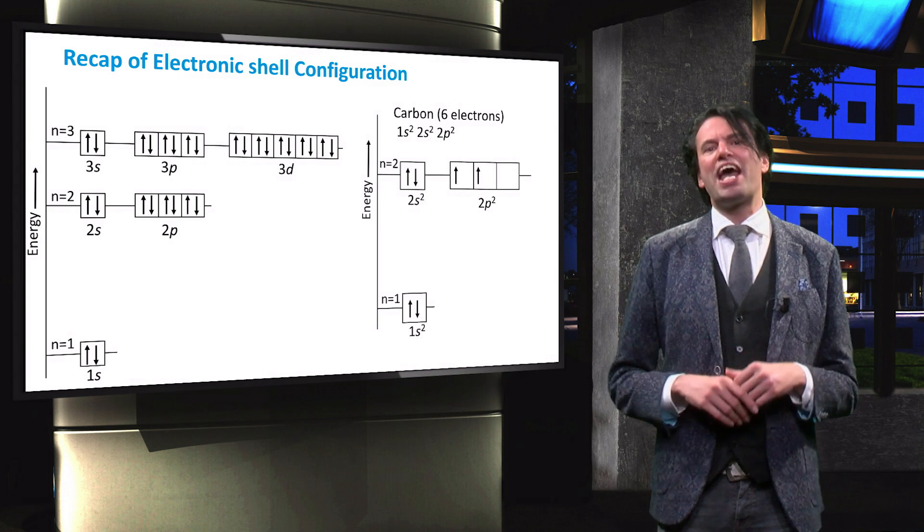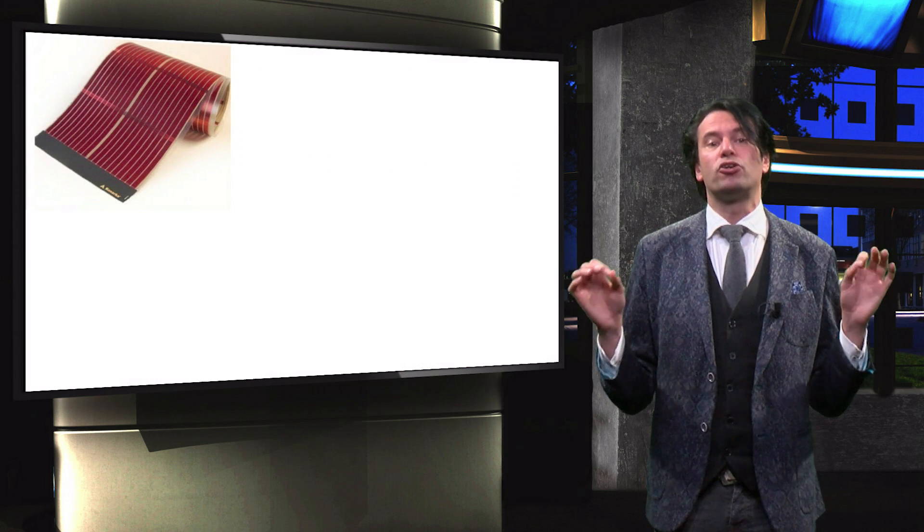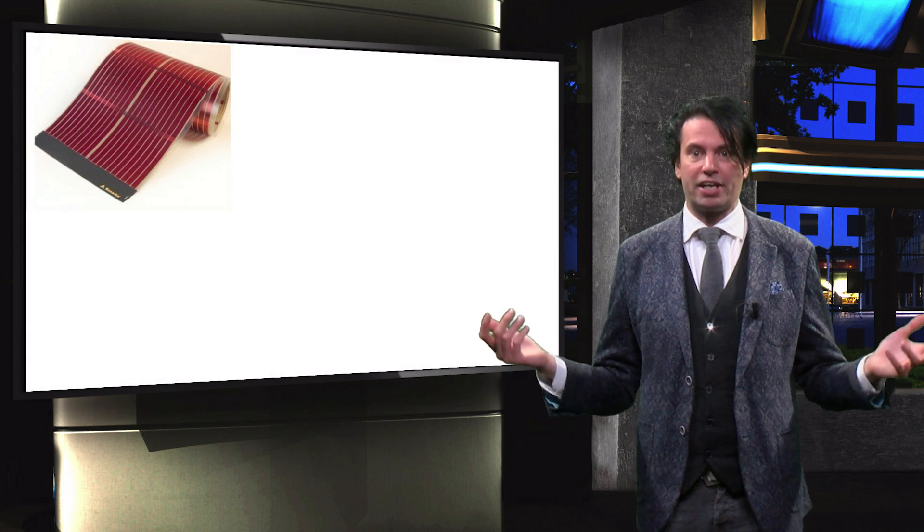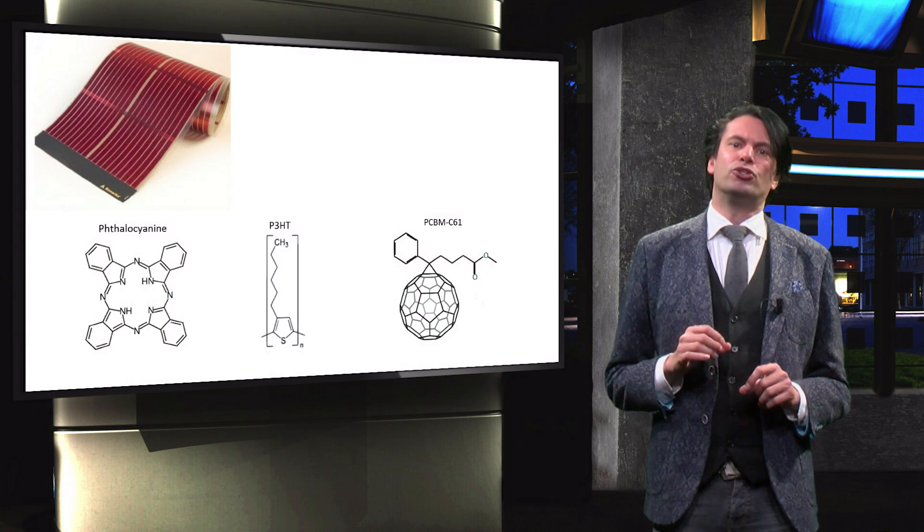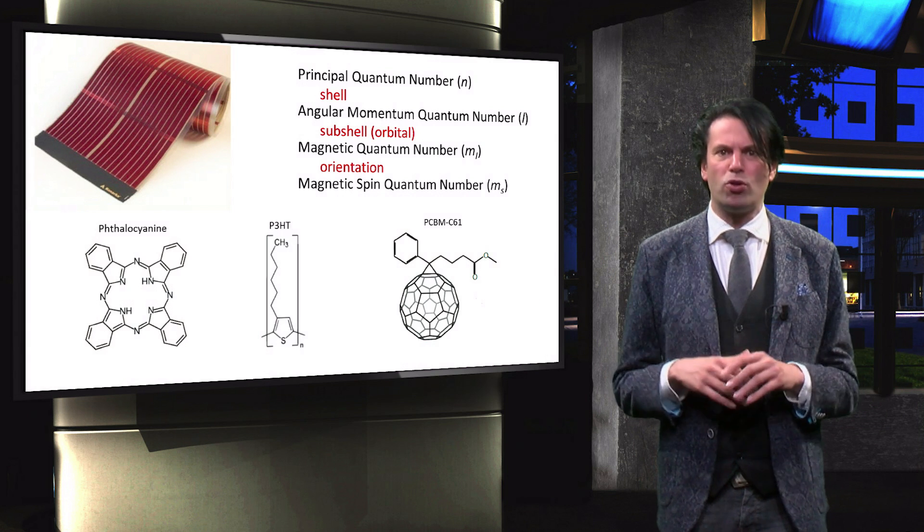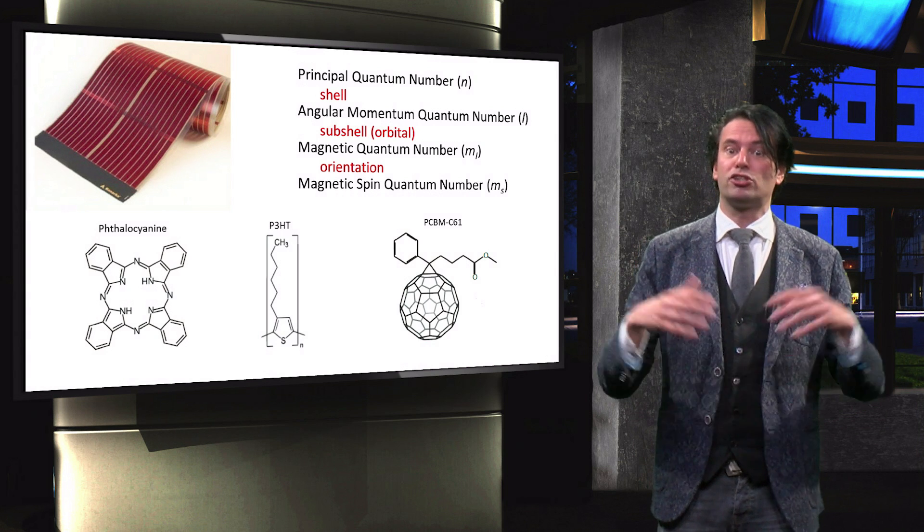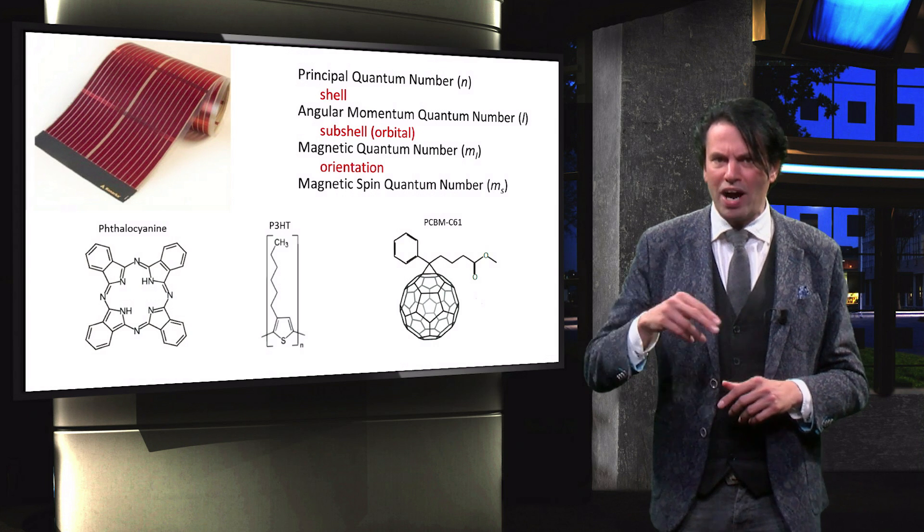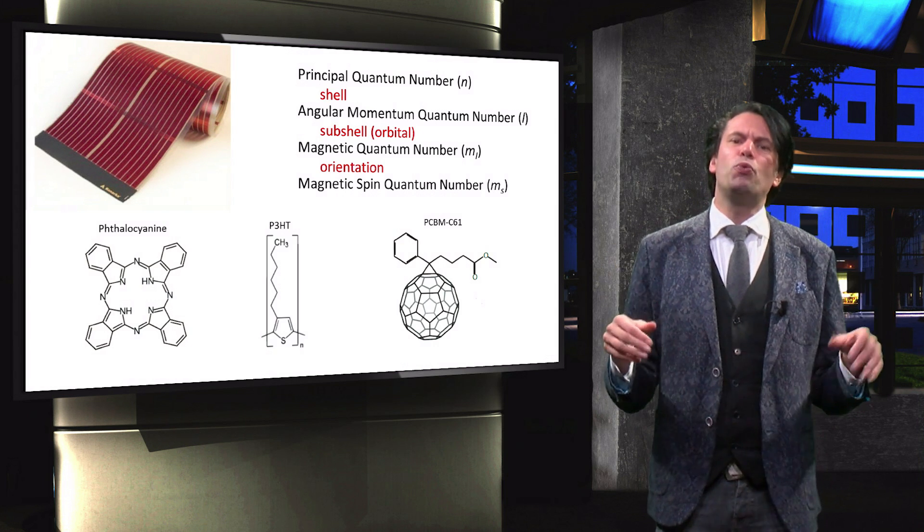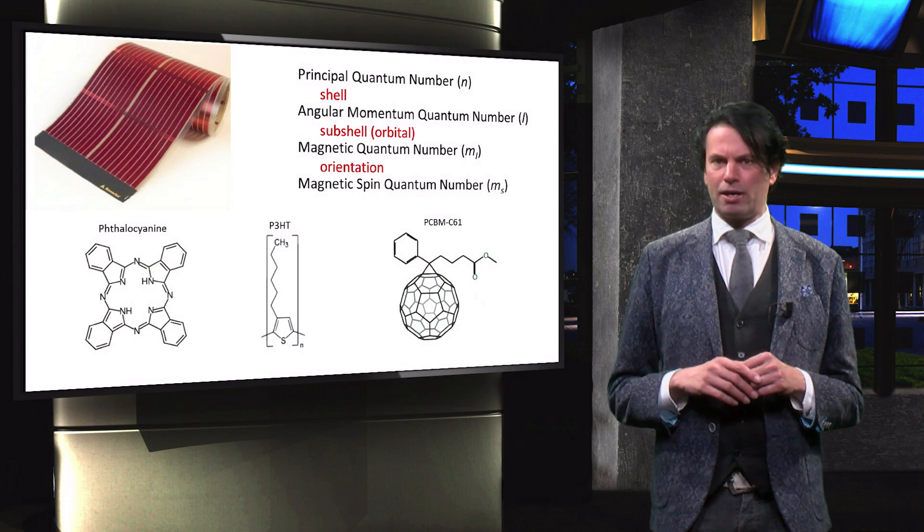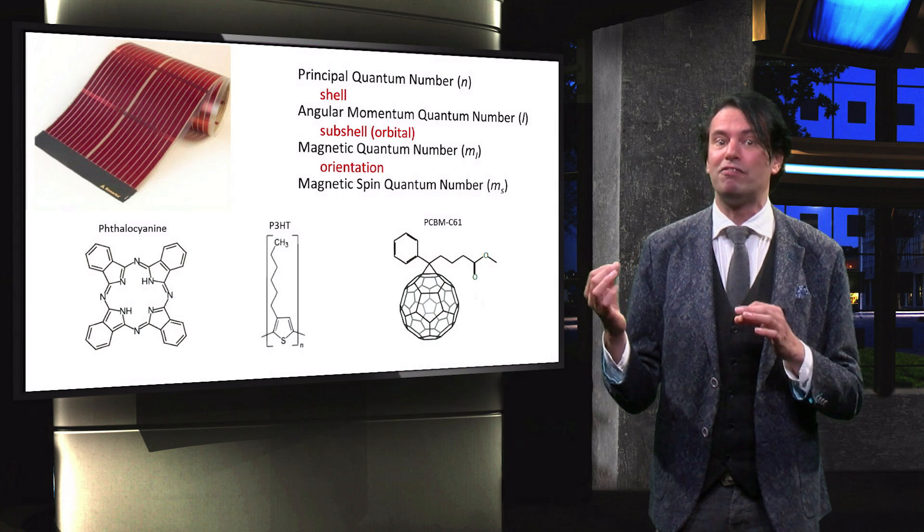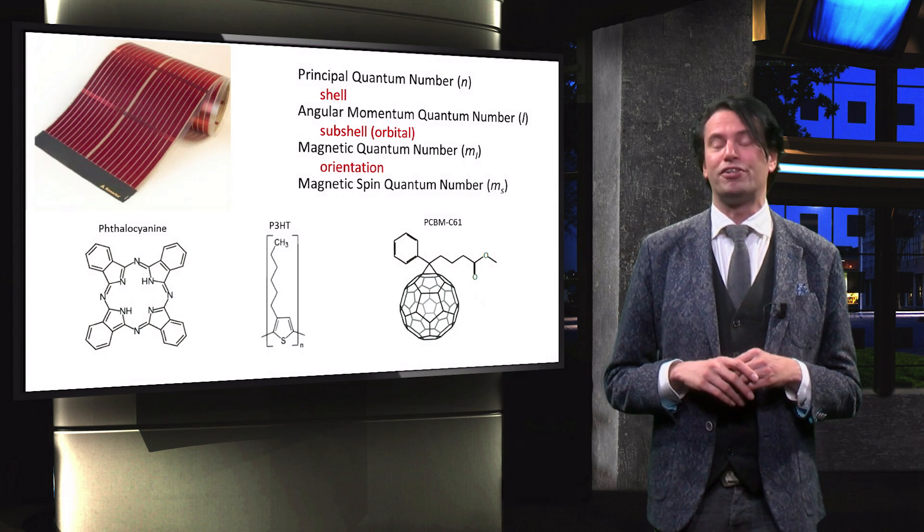In summary, we have introduced the organic PV technology which has the potential to offer low-cost production and versatile application. A basic knowledge of chemistry and quantum mechanics is required to understand the working principle of a semiconductor material that consists of organic molecules rather than inorganic semiconductor material. In the next video we will continue with the chemical bonding of organic molecules, charge carrier transport and the formation of energy levels in organic photovoltaic materials.